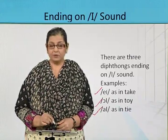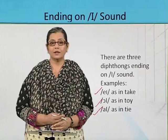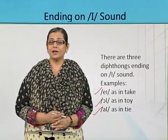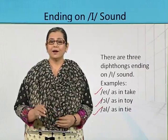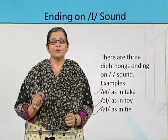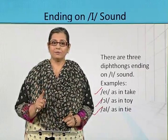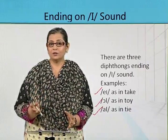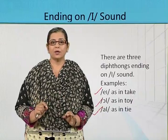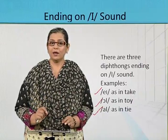The third one is as in the word 'tie' — ta-E. In 'tie' there are two sounds: the first is a consonant 'T' as you know, and the second sound is a diphthong.